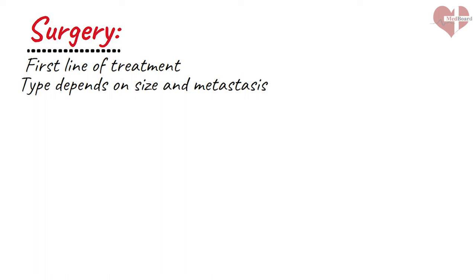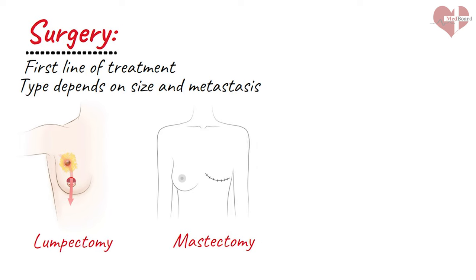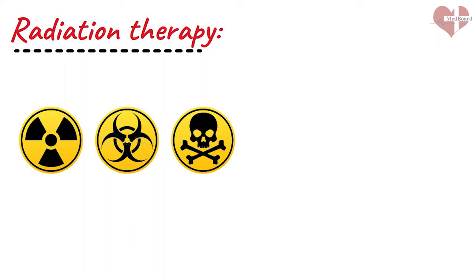The treatment options for breast cancer can include surgery, which is often the first line of treatment. The type of surgery recommended depends on the stage and location of the cancer, as well as factors such as tumor size and whether the cancer has spread to nearby lymph nodes. The two main types of surgery are lumpectomy and mastectomy. Lumpectomy is a breast-conserving surgery where only the tumor and a small amount of surrounding tissue are removed, typically followed by radiation therapy. Mastectomy is a surgery where the entire breast is removed, along with nearby lymph nodes in some cases. Radiation therapy uses high-energy x-rays or other types of radiation to kill cancer cells and is often used after surgery to destroy any remaining cancer cells, or as the main treatment for patients who cannot have surgery.